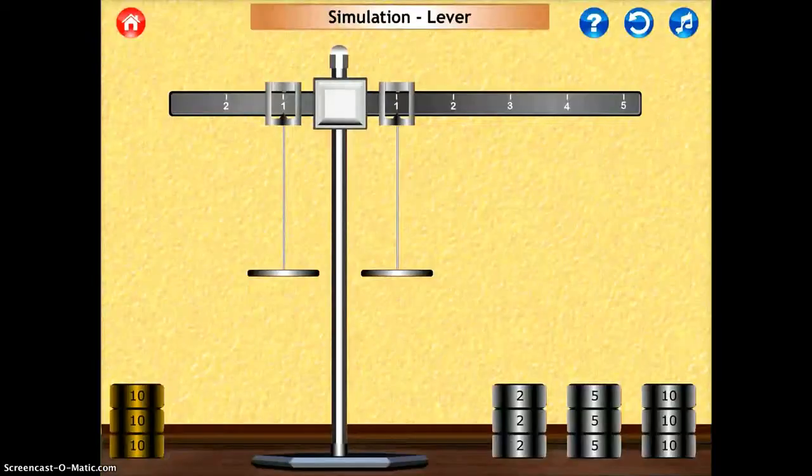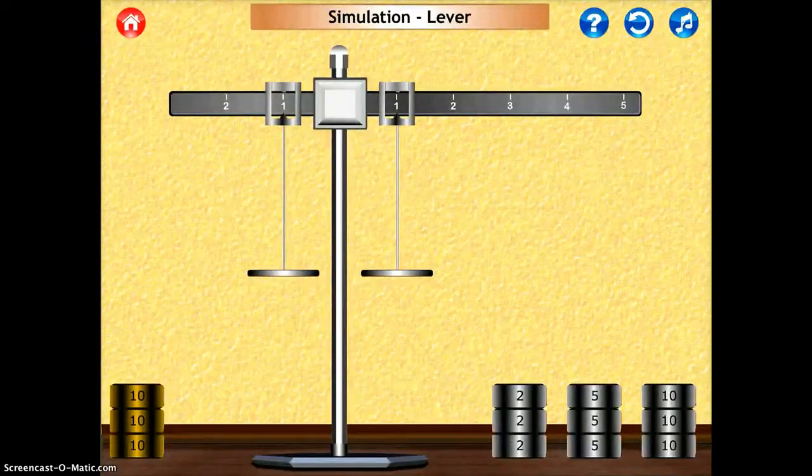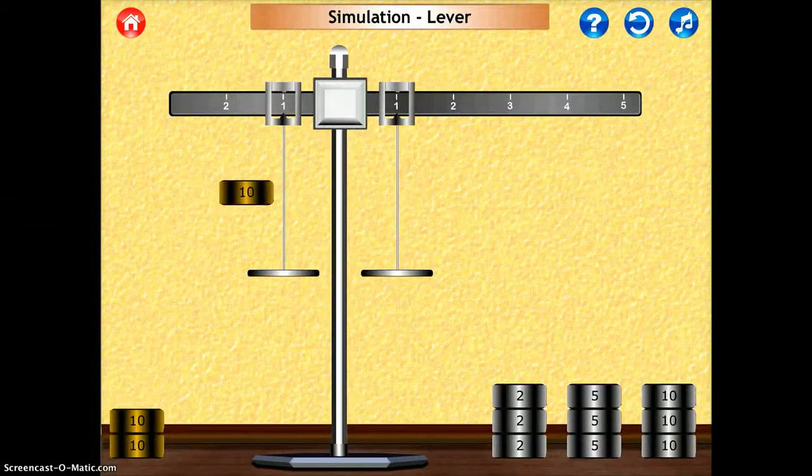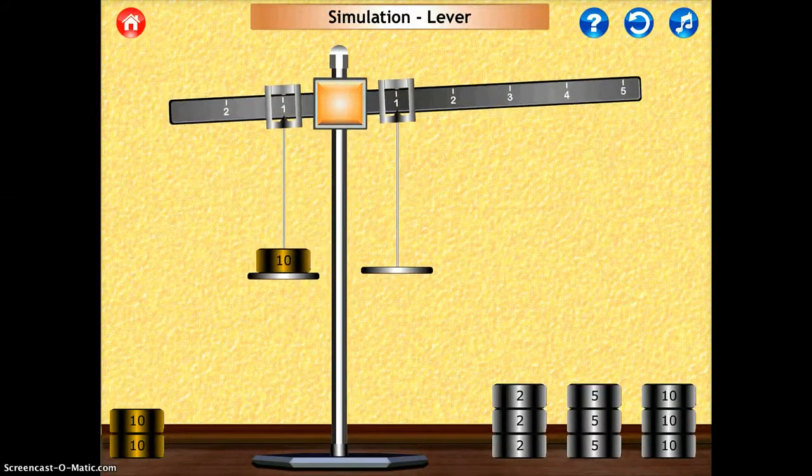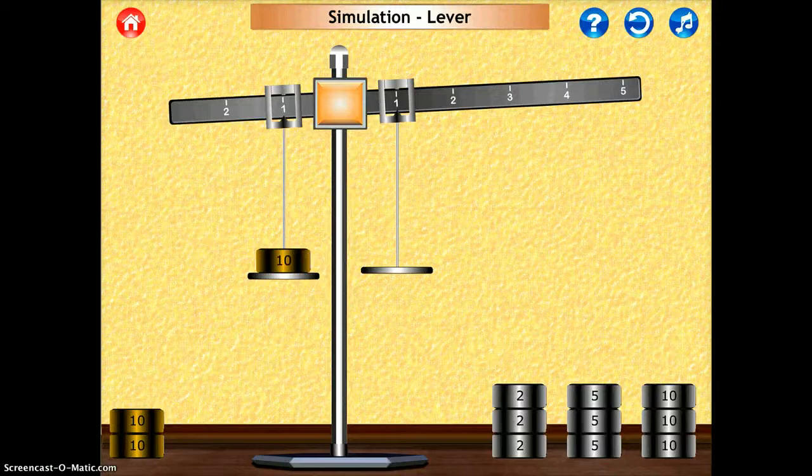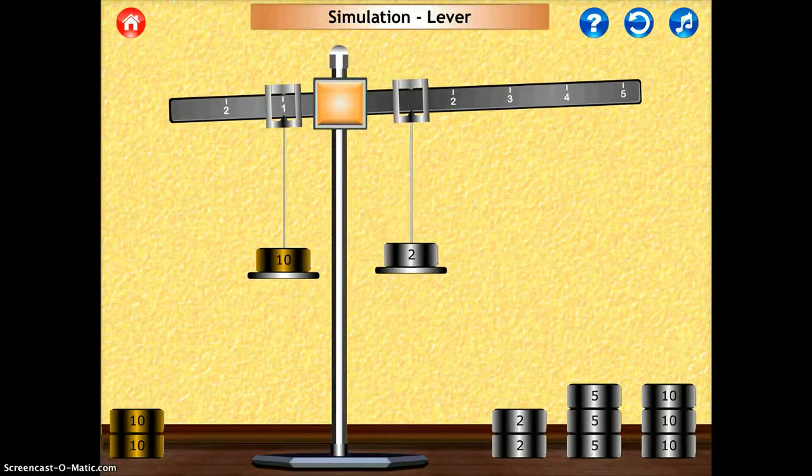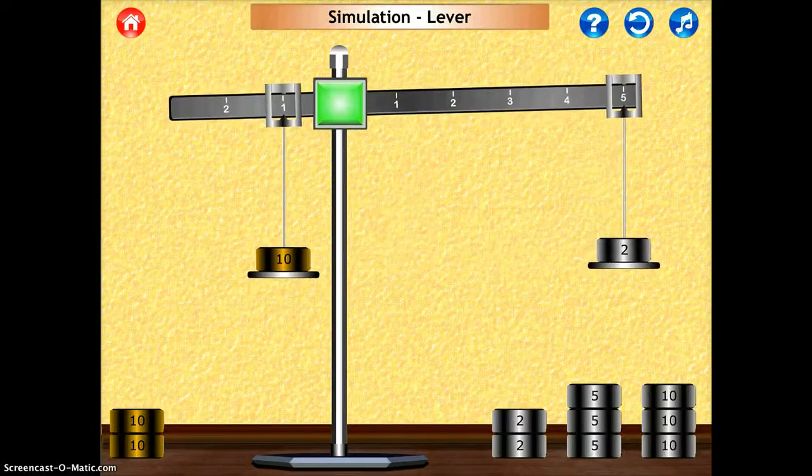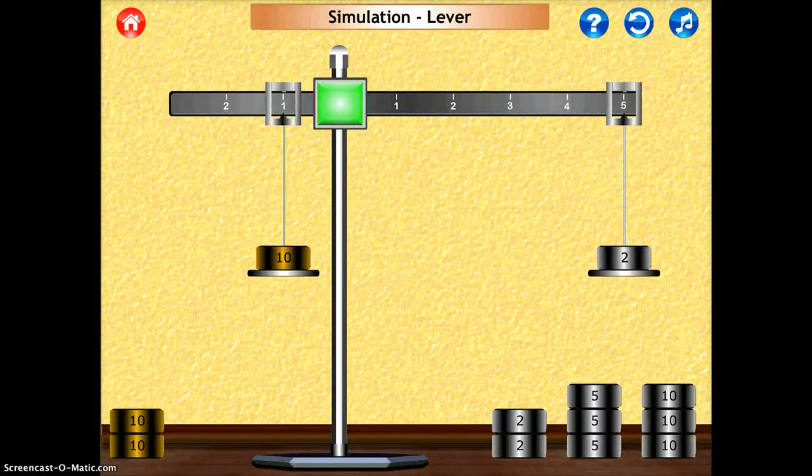The Simulation allows you to actually do weights. I can put the 10 pound here. You'll see that I have one 10, so that's 10 pounds. And then if I put a 2 pound weight over here and move it to the 5, so that's 5 times 2, you'll see that the middle part turns green and it's because I have an even lever.